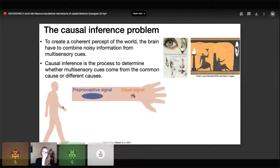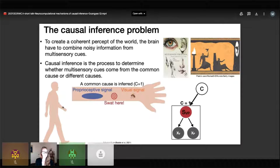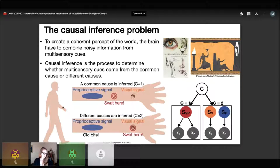Causal inference is the process to determine why multisensory cues come from the common cues or different cues. For example, when a mosquito bites you and you want to swat it, you receive proprioceptive and visual signals. If a common cues is inferred, you will integrate these two signals and swat here. Otherwise, different cues are inferred and you will ignore the proprioceptive signal.